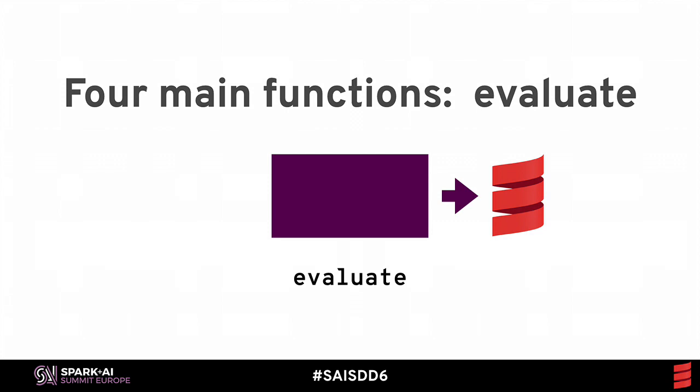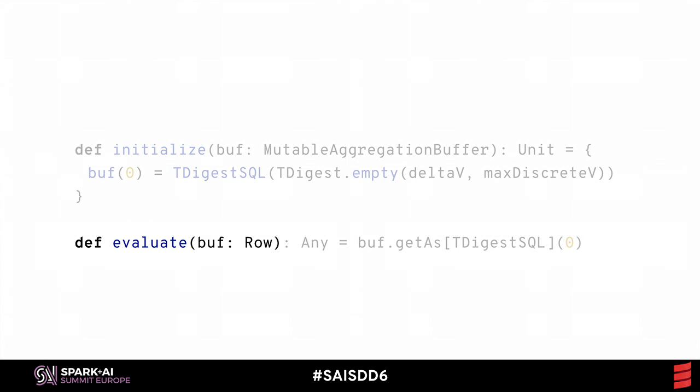When the aggregation operator is complete, I have to specify the form of the result that's going to be returned to the user. Evaluate expects a row type for its parameter instead of one of these mutable aggregation buffer types. The data type returned to the user is different than the user-defined type used by the internal logic, and I'll talk more about this particular type in a little bit.